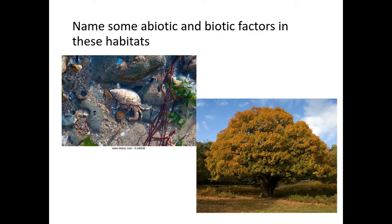Here are examples of two different habitats. If you'd like to pause the video and think about some abiotic and biotic factors, please do so now. The top one is a rock pool. Abiotic factors here include water availability, sunlight for the seaweed, pH of the salt water, and possibly pollutants in the seawater. Biotic factors include competition between hermit crabs, and parasitism may also be occurring.